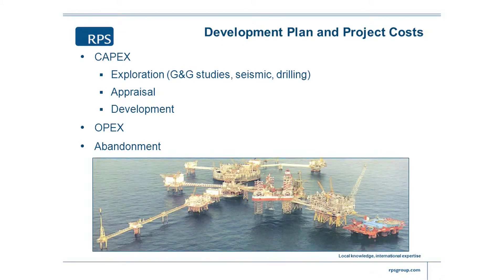Once we've got it on stream, then there's ongoing operating costs — opex, as we call it. And that will be recurring costs which are needed to keep that oil flowing. And the final piece of the cost, which maybe 30 years ago when I started out in the industry we didn't pay a lot of attention to, but is becoming much more important and we'd never even dream of ignoring now, is the abandonment costs.